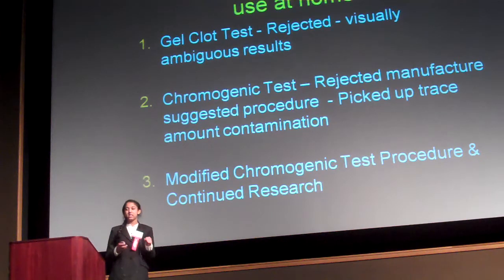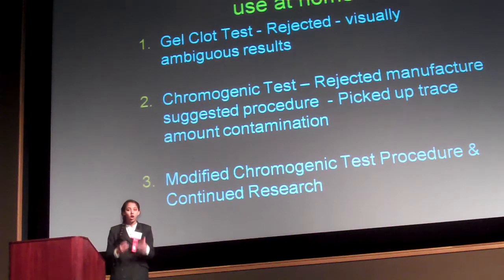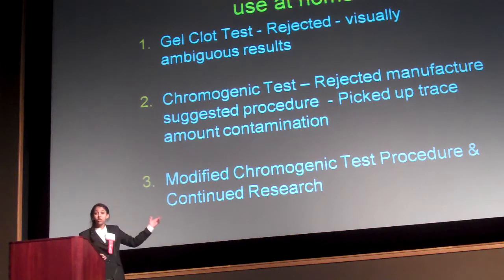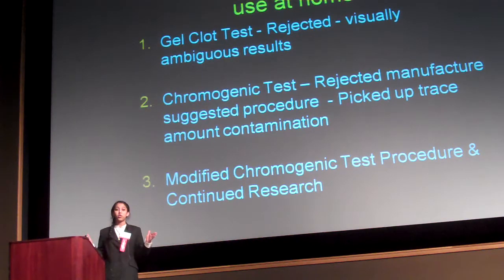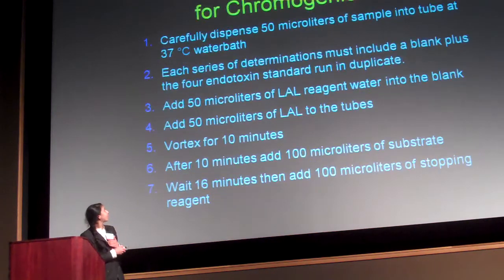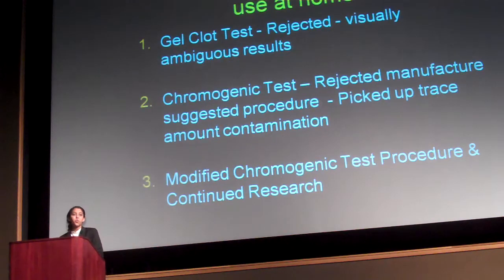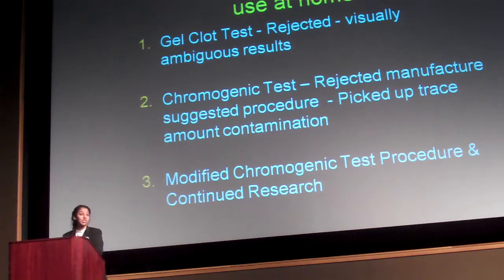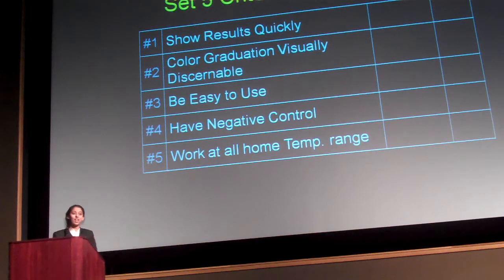I moved on to the chromogenic test. The LAL works with a chromogenic substrate — essentially a dye — and these two work together to change color in the presence of endotoxin. It did change color in the presence of endotoxin; however, I had to modify the procedures to pick up the threshold of endotoxin I wanted to detect. The pharmaceutical recommended procedure requires adding water, endotoxin, and LAL, incubating for 10 minutes, adding a chromogenic substrate, incubating for 16 minutes, adding a stopping reagent, and reading results through a photospectrometer — a very intense procedure that cannot be done at home.